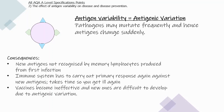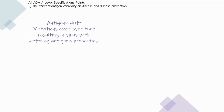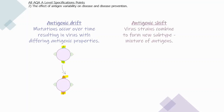Antigenic drift refers to mutations that occur over time, resulting in a virus with differing antigenic properties — for example, antigens changing from blue to purple. This takes more time and is less severe. However, antigenic shift is when two virus strains combine to form a new subtype that is a mixture of antigens from both strains. This is more drastic than antigenic drift.